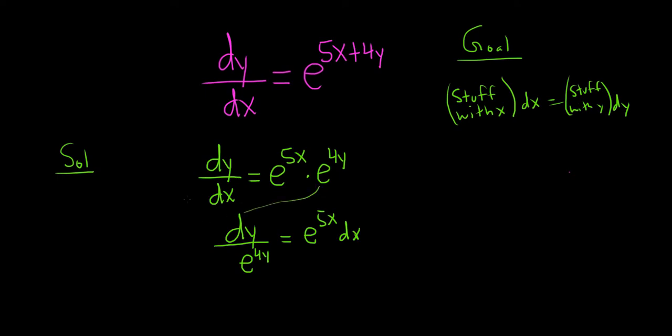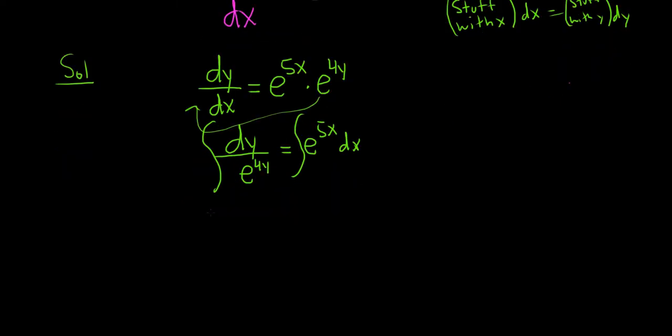Now we can integrate both sides. Let's go ahead and bring this e here on the left upstairs - that makes the exponent negative, so it's e^(-4y) dy equals e^(5x) dx.